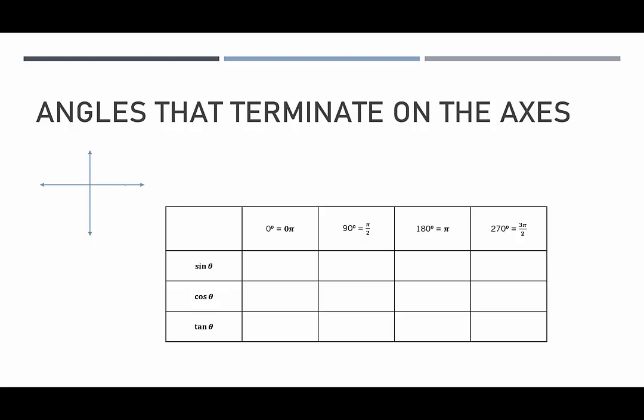We're going to talk about the point here, which on the unit circle would be 1, 0. And we're going to talk about this point here, which is 0, 1. And we're going to talk about this one here, which is negative 1, 0.